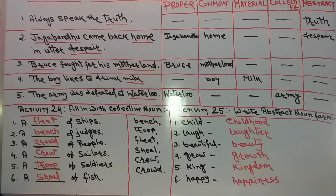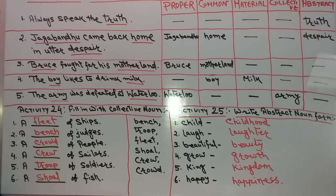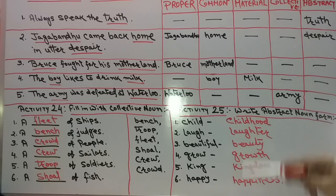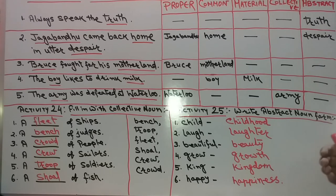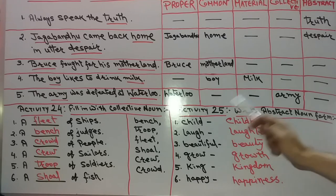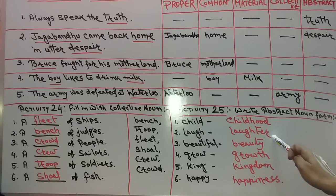Activity 24 is done. Next we go for Activity 25. Activity 25 is: write the abstract noun form. We are given words and have to write the abstract noun form. Child — the abstract noun form of child is childhood. Laugh — abstract noun is laughter.